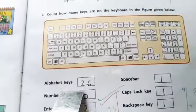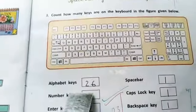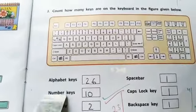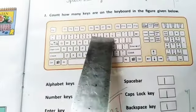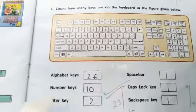Alphabet keys - how many alphabet keys in the keyboard? 26 alphabet keys. How many number keys? 1, 2, 3, 4, 5, 6, 7, 8, 9, and 0 - 10 number keys. How many enter keys?